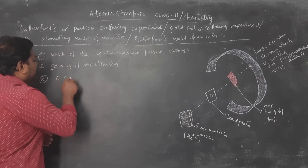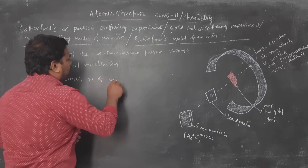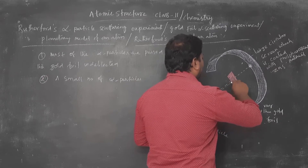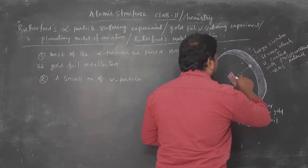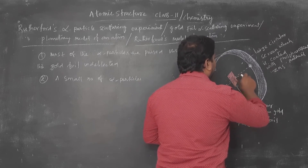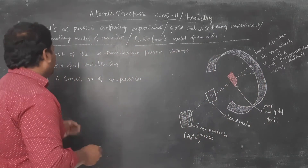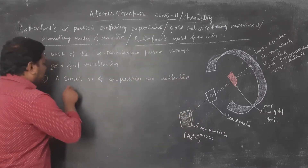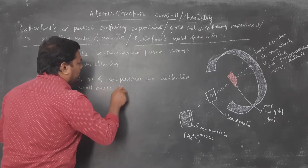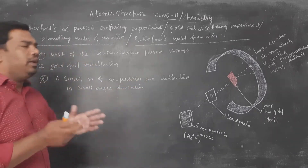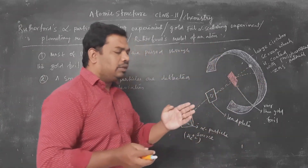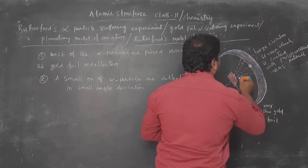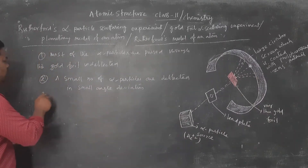The second observation: a small number of alpha particles were deflected with a small angle deviation when they hit the gold foil. So a small number of alpha particles were changing their direction.